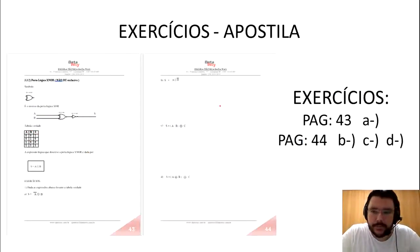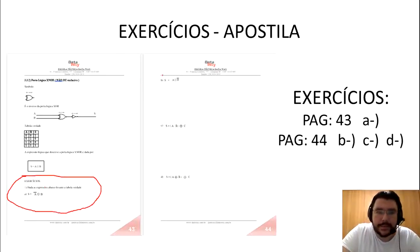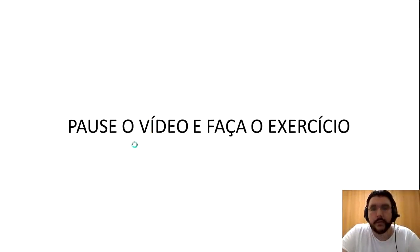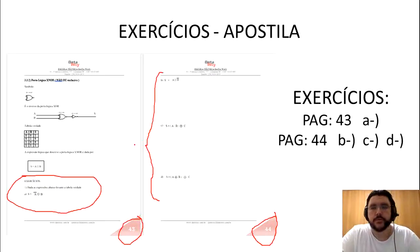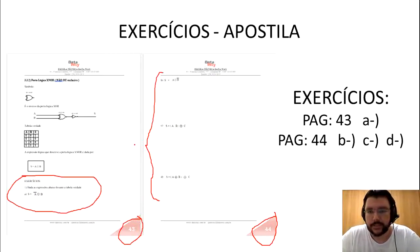Convido você a fazer os exercícios das páginas 43 e 44 da apostila — apenas quatro exercícios, letras A, B, C e D — onde peço para levantar o circuito e a tabela verdade das expressões dadas. Pause o vídeo agora, faça os exercícios, levante o circuito primeiro e depois tire a tabela verdade. Eu volto na sequência com a correção.